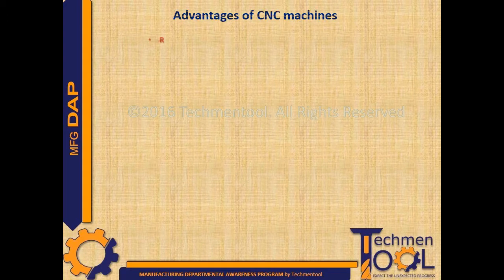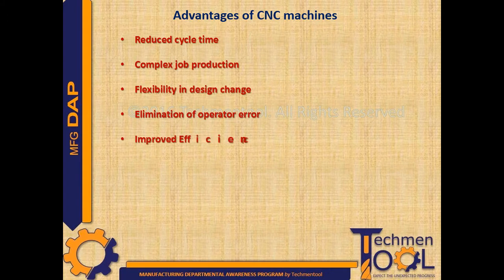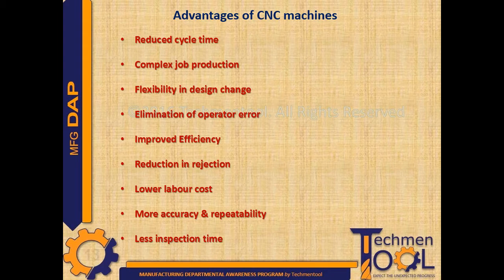What are the advantages of CNC machines? Reduced cycle time, complex job production, flexibility in design change, elimination of operator error, improved efficiency, reduction in rejection, lower labor cost, more accuracy and repeatability, and less inspection time.